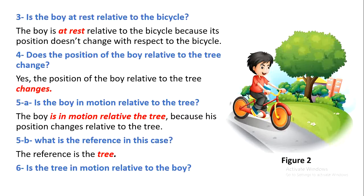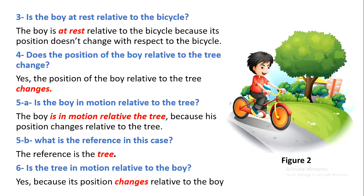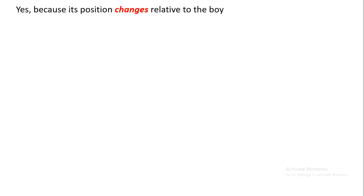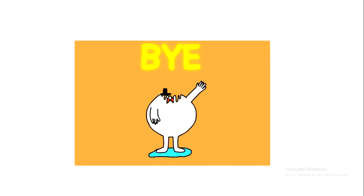Is the tree in motion relative to the boy? The boy is moving away from the tree, so the position of the tree is changing relative to the boy — yes, the tree is in motion relative to the boy, because its position changed relative to the boy. So that's all for today. I hope you enjoyed the video and understood the lesson. Goodbye — you can ask me if you have any questions.